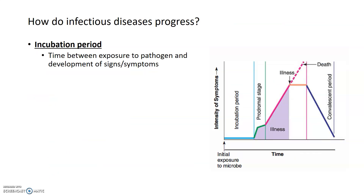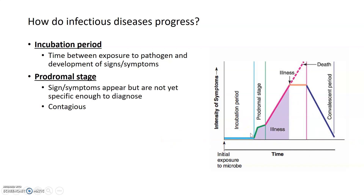Infectious diseases progress in a stereotypic way through four stages. The first stage begins as soon as you're initially exposed to a pathogen. The time from that initial exposure — shown in the graph — to the time when you start to show symptoms is known as the incubation period. Incubation periods can vary depending on the disease, but importantly you don't have signs or symptoms during the incubation period. You are also not contagious. The shaded purple area in the graph indicates the time when the disease is communicable or contagious to other people.